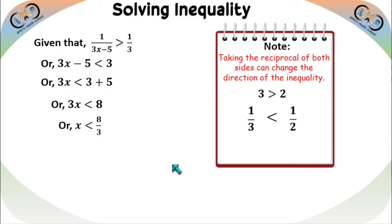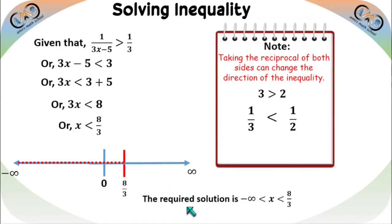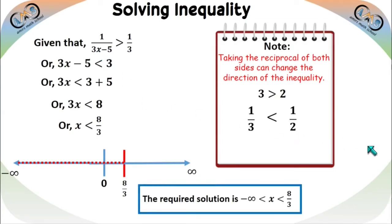On the number line, with 8/3 marked, x < 8/3 means the solution lies on the left side — from 8/3 toward negative infinity. The value 8/3 is excluded (strict inequality). The required solution is x ∈ (−∞, 8/3). We must check the undefined point for this fractional inequality.